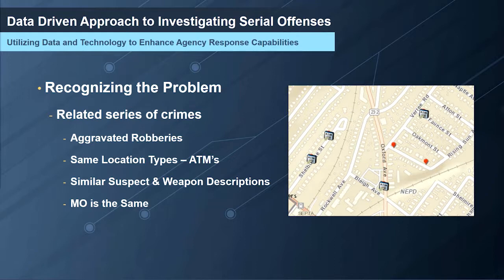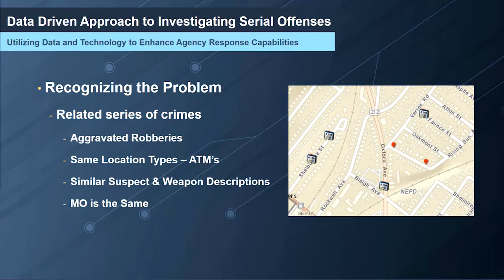The first step in dealing with a crime series is recognizing there's a problem. If you're not aware something is happening in your community, it's difficult to put together an action plan. Esri and GeoShield can play a part here — the tools enable law enforcement to understand what their data is telling them so they can see changes sooner. This scenario involves a string of aggravated robberies at ATMs, with victims and witnesses giving similar descriptions of the suspect, weapon, and MO.